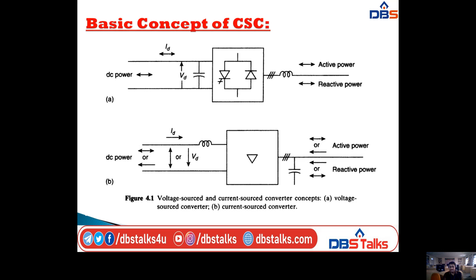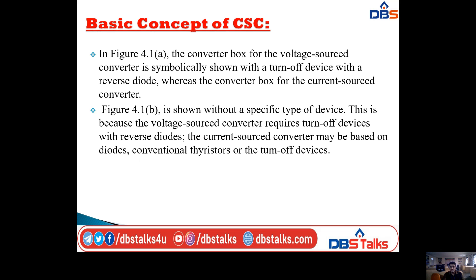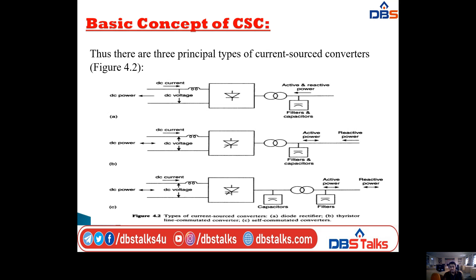The first diagram is entirely for the voltage source converter, where the converter box is symbolically shown with a turn-off device with a reverse diode. The converter box for the current source converter, shown in diagram B, is shown without a specific type of device. This is because the voltage source converter requires turn-off devices with reverse diodes, whereas the current source converter may be based on diodes, conventional thyristors, or turn-off devices.